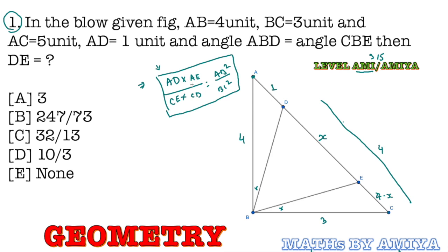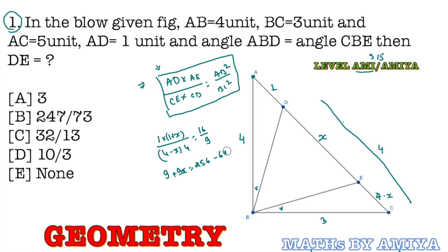Now put the values in the isogonal property formula. AD is 1, AE is 1 plus X, CE is 4 minus X, and CD is 4, equal to AB² which is 16 upon BC² which is 9. Solving: 9 plus 9X into 16 gives 64 minus 64X on the other side. Rearranging, 73X equals 247, so X equals 247 divided by 73.